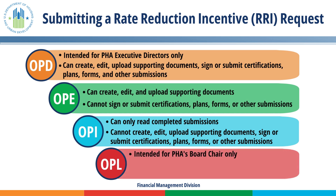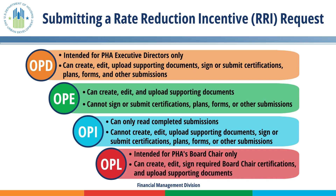The OPL user role is for the PHA's board chair only. This user can create, edit, manually or electronically sign required board certifications, and upload supporting documents. This user cannot sign or submit plans, forms, or other types of submissions. Follow up with your PHA's WAAS coordinator to ensure that they only assign one role per user. In cases where a user has more than one role assigned, the system will automatically default to the access rights of the lower of the role selected.